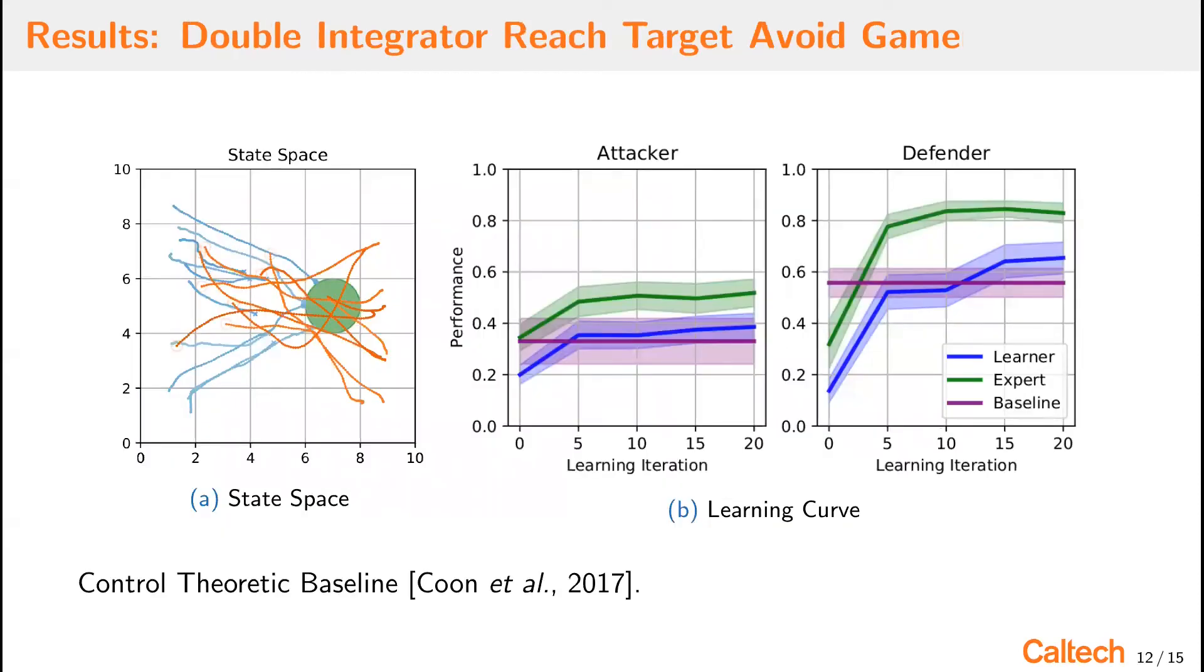Here we study the double integrator reach target avoid game. We study this game because it's very complex and high dimensional with the number of robots on the team. And there exists currently no good computational methods for this type of problem. However, we're able to show that NTE can scale to this problem complexity and finds good solutions. The state space is shown on the left for a 10v10 reach target avoid game. And on the right, we show the progress over learning iterations and the learning curve plots. These plots are generated by considering a set of policies, the learner and expert for various learning iterations, and a baseline control theoretic method. And we're able to show that each of the policies play combinatorially all the other policies, and then we plot the terminal reward. And so we see that in these cases, the learner and the expert increase over time, over learning iteration, and quickly overtake the baseline policies.